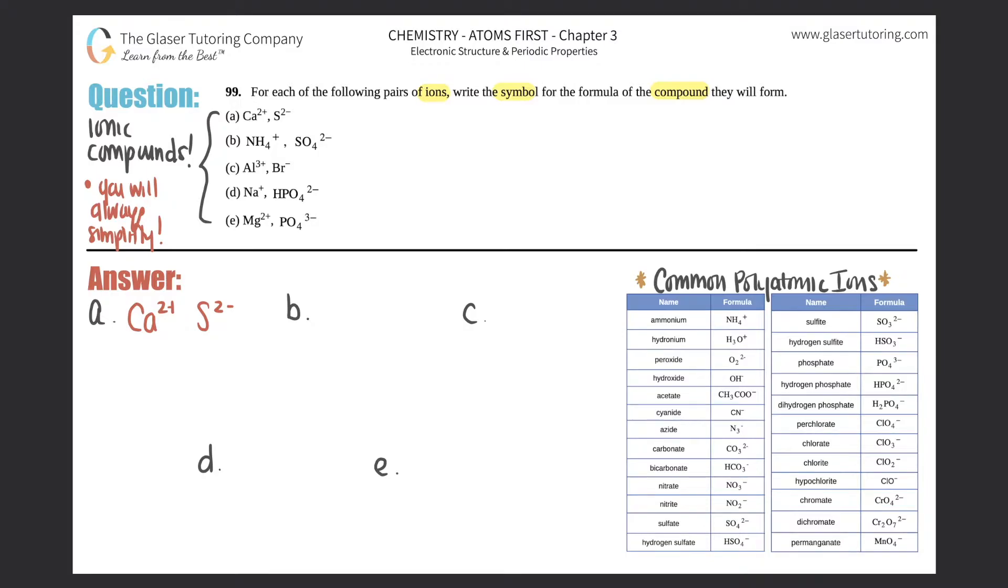How do we make a compound? It always comes from the oxidation states, aka the charges. Calcium had a plus two charge and sulfur had a minus two charge. What you're always going to do for this, especially for all ionic compounds, is the criss-cross method.